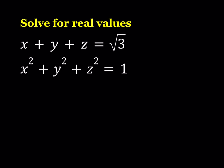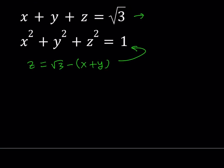In order to manipulate this equation, from the first one I'm going to isolate z. z can be written as square root of 3 minus the quantity x plus y. And then I'm going to substitute that into the second equation, which gives me x squared plus y squared plus the quantity square root of 3 minus (x plus y), all squared, equals 1.